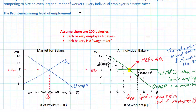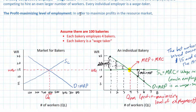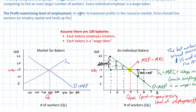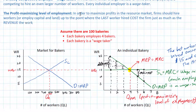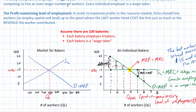So let's put this into a simple rule. In order to maximize profits in the resource market, firms should hire workers or employ other factors of production, such as capital and land, up to the point where the last worker hired costs the firm just as much as the revenue the worker contributed. In other words, the firm will break even on the last worker hired — hire up to the point where marginal revenue product equals marginal resource cost.